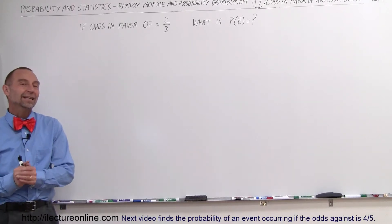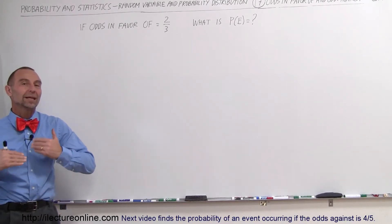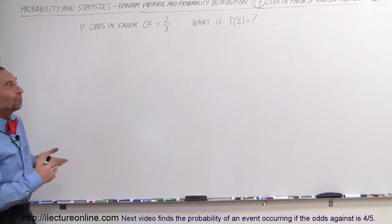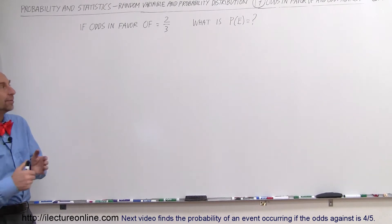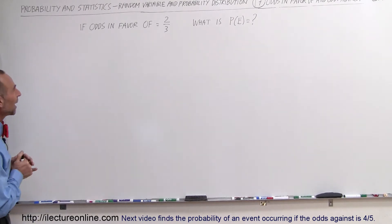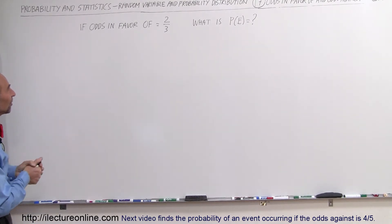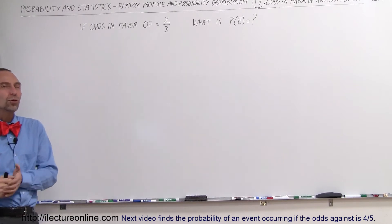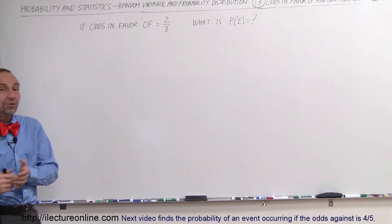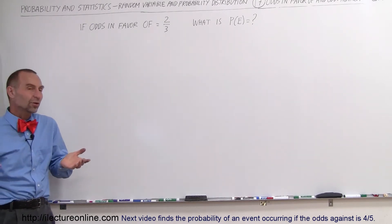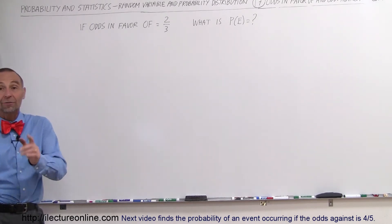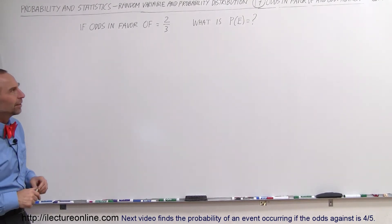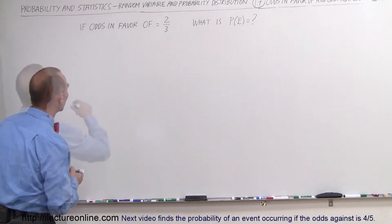Welcome to ElectroOnline. We're going to do an example of odds in favor of and odds against mathematics. If someone says the odds in favor is equal to two-thirds, you may ask yourself: what is the probability of the event occurring? Let's find out how to do that.